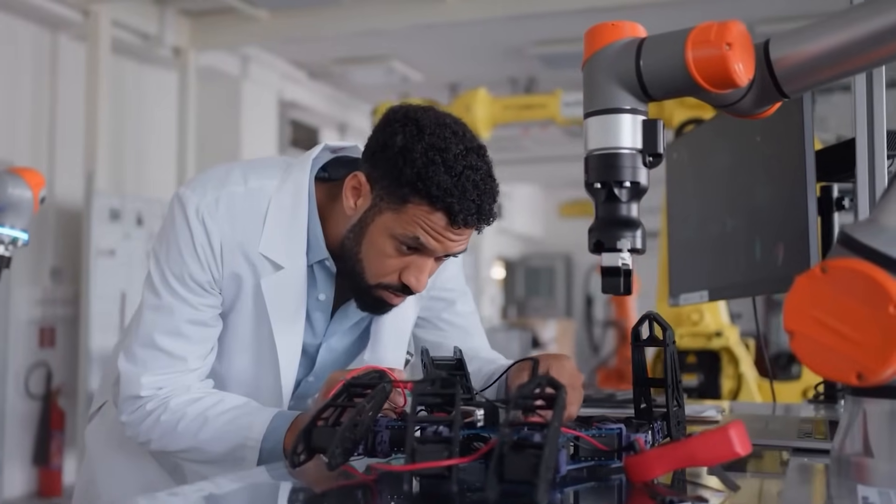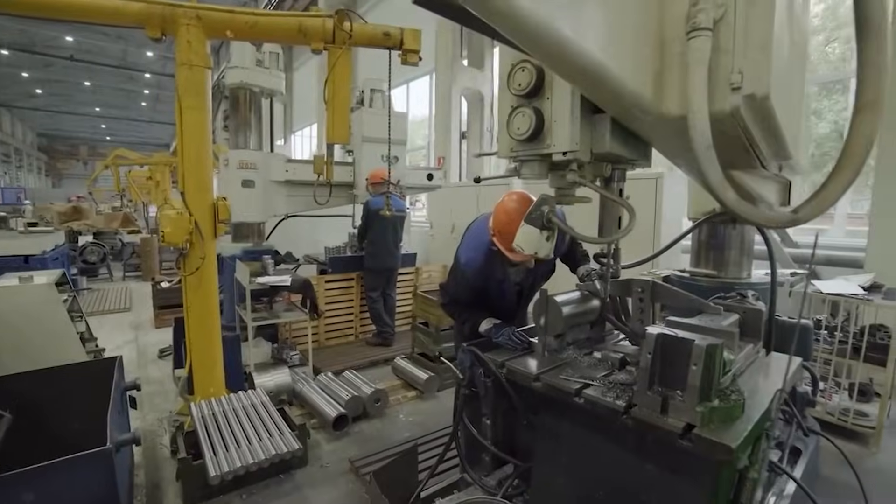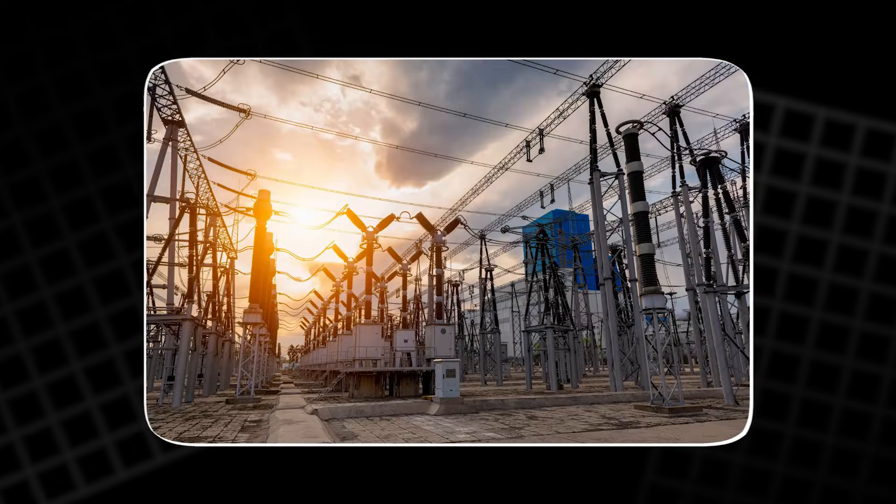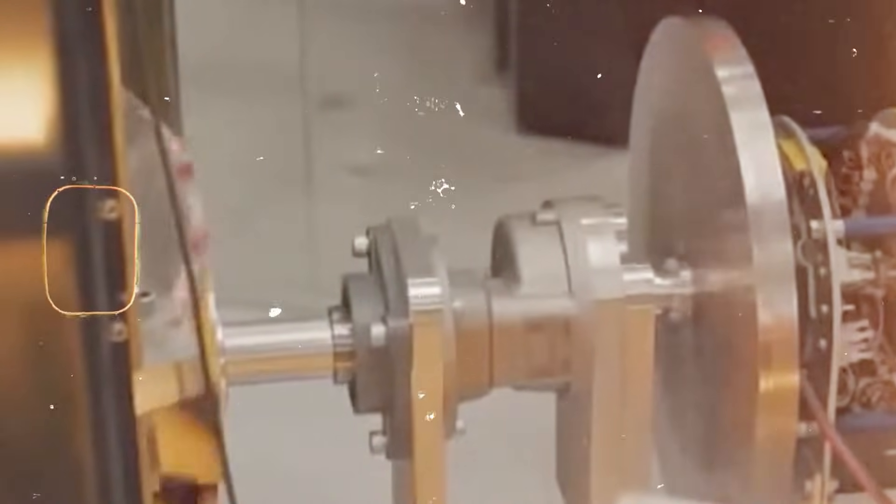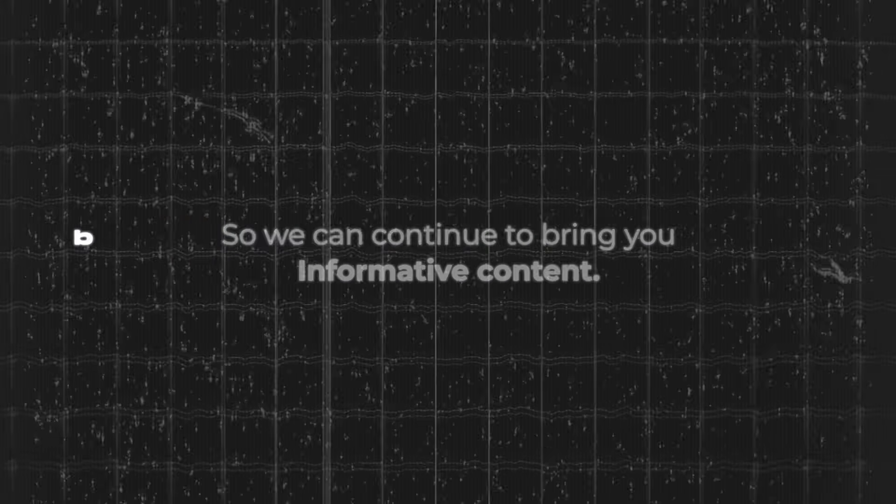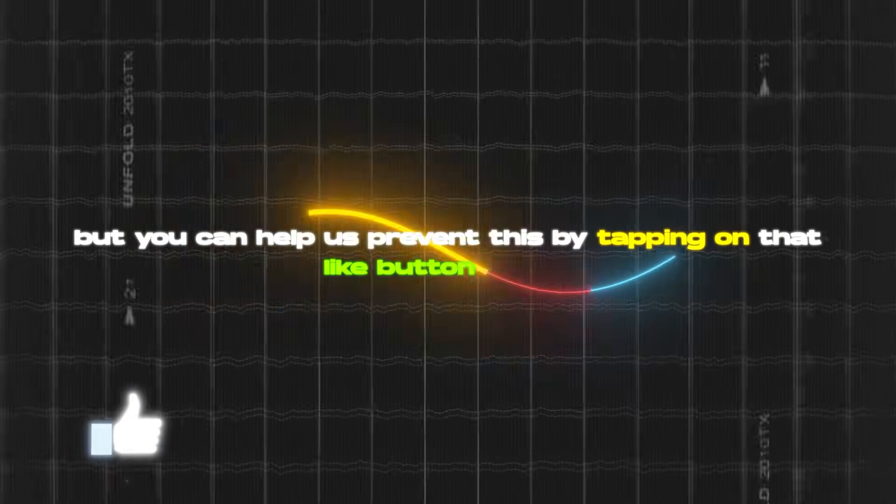And when people say, maybe science is wrong, they forget that everything they use daily, from phones to cars to power grids, depends on those same laws working perfectly. Now first, like always, be sure to hit the like button down below. It helps us out tremendously with the reach of this video.